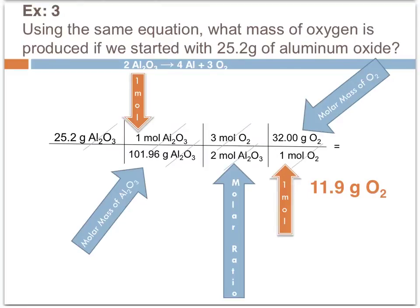In this question, still using the same balanced chemical equation of the decomposition of aluminum oxide, the starting material is 25.2 grams of aluminum oxide. The question is how many grams of oxygen when they ask for what is the mass of oxygen produced? These mass-to-mass conversions require more steps.